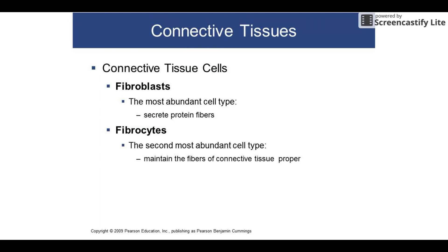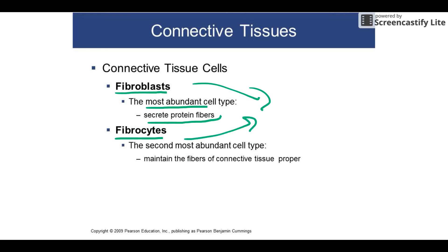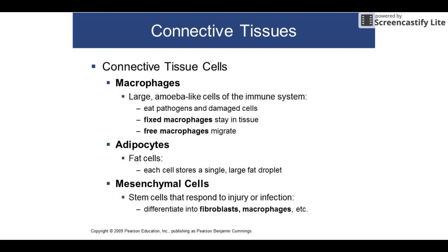Let's talk about the types of cells found in connective tissue. Fibroblasts are the most abundant and they secrete the protein fibers — things like collagen, reticular fibers, and elastic fibers. Fibrocytes are the caretakers — once fibroblasts make a fiber, fibrocytes maintain and repair little tears. So fibroblasts are the original builders and fibrocytes handle maintenance over the course of your life.